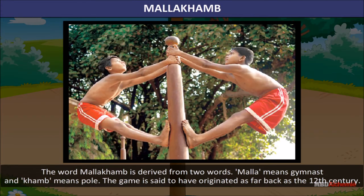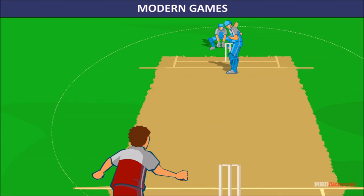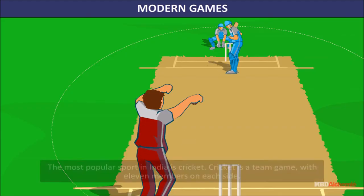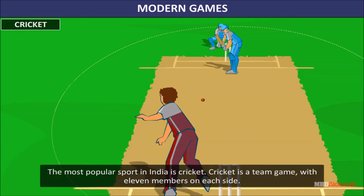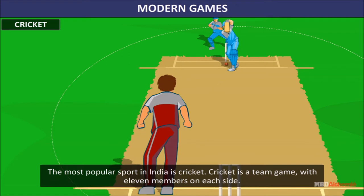This is a traditional Indian sport — Mallakhamb. The word Mallakhamb is derived from two words: 'malam' meaning gymnast and 'kamb' meaning pole. The game is said to have originated as far back as the 12th century.